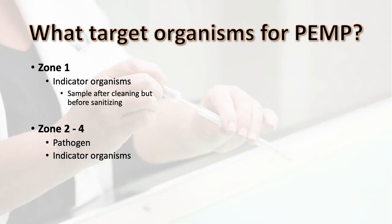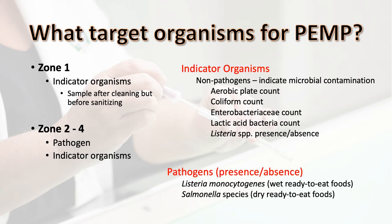The target organism is usually determined by sample zone. For zone 1 surfaces, it is typical to test for and enumerate indicator organisms. These are non-pathogenic microorganisms that should be much more common in the environment than pathogens. The choice of indicator organism will depend on several factors specific to your product, equipment, facility, and the pathogen of concern. You can use general guidelines or an analysis of your own data to set limits for your chosen indicator organism.